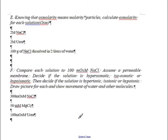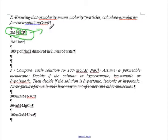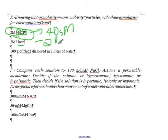Finally—knowing that osmolality equals molarity times particles—let's calculate the osmolality for each solution. Suppose I have 2 molar sodium chloride. Osmolality equals molarity times particles. There are two particles: sodium and chloride. Two times two means osmolality of four. Now urea—that's only one particle. So two times one means you have 2 osmolality.